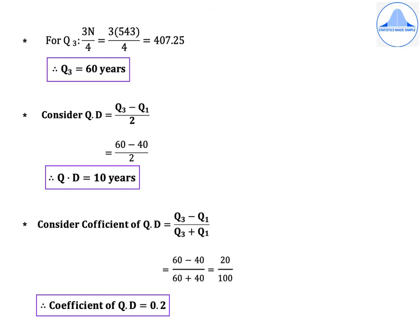For Q3, find 3N/4 = 3 × 543 / 4 = 407.25. The value greater than 407.25 in the CF column is 489 — mark it as greater than 3N/4. The corresponding X value is 60, therefore Q3 = 60 years. Quartile deviation = (Q3 − Q1) / 2 = (60 − 40) / 2, so quartile deviation = 10 years.